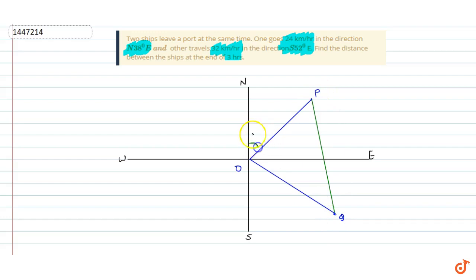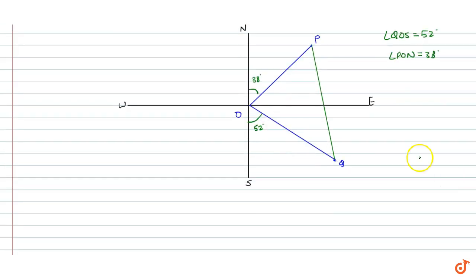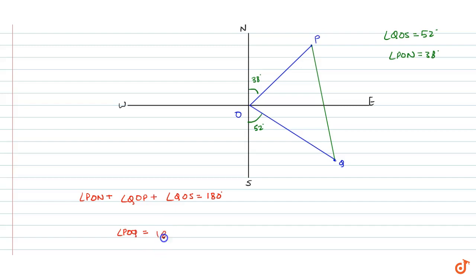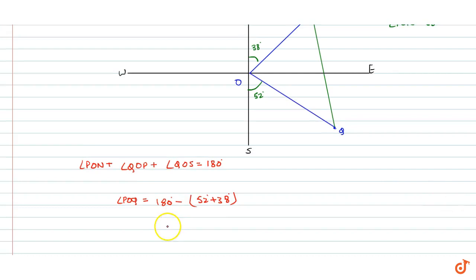This angle is 38 degrees and this angle is 52 degrees. Angle QOS is 52 degrees and angle PON is equal to 38 degrees. We have to find the linear pair — angle PON plus angle QOP plus angle QOS equals 180 degrees. So angle QOP equals 180 minus 52 minus 38, which gives us 90 degrees.